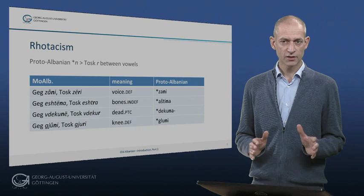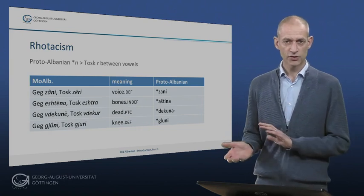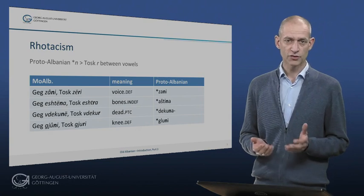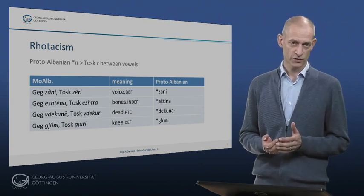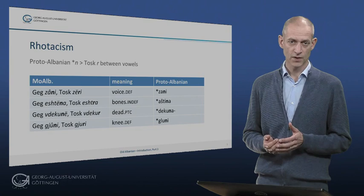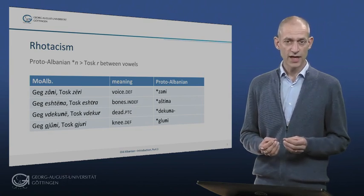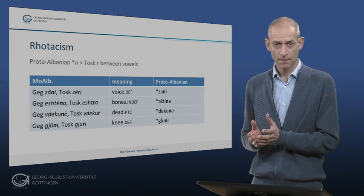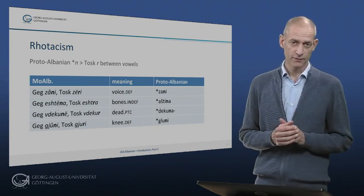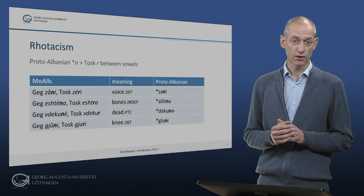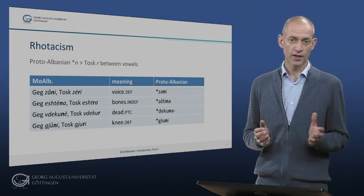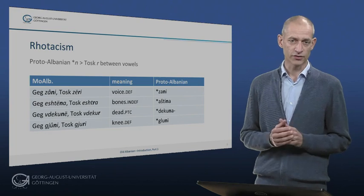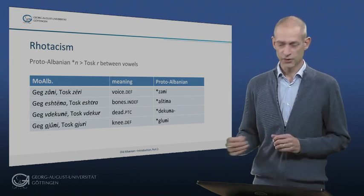The main feature defining the binary split between GEG and TOSC is a historical change: the passage of the consonant N to R between two vowels in the TOSC dialects. That is to say, the N originally stood between two vowels when this change happened. In part of the vocabulary, the second vowel was subsequently lost so that the TOSC R can now be found at the end of the word or directly after a consonant. I will give you a few examples.